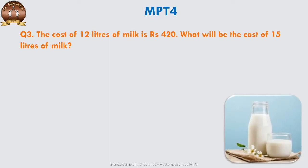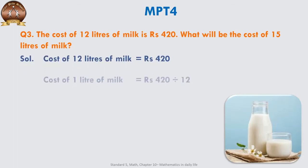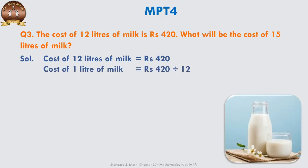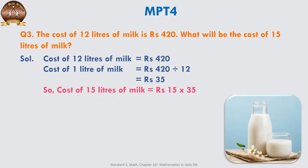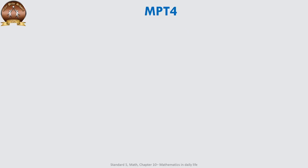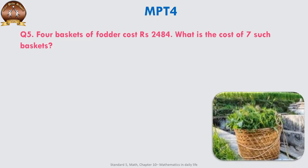The cost of 12 liters of milk is ₹420. What will be the cost of 15 liters of milk? Cost of 12 liters = ₹420. Cost of 1 liter = ₹420 ÷ 12 = ₹35. When more quantity is given and you have to find the cost of one thing, you divide. Cost of 15 liters = 15 × 35 = ₹525. Thus, cost of 15 liters of milk is ₹525.